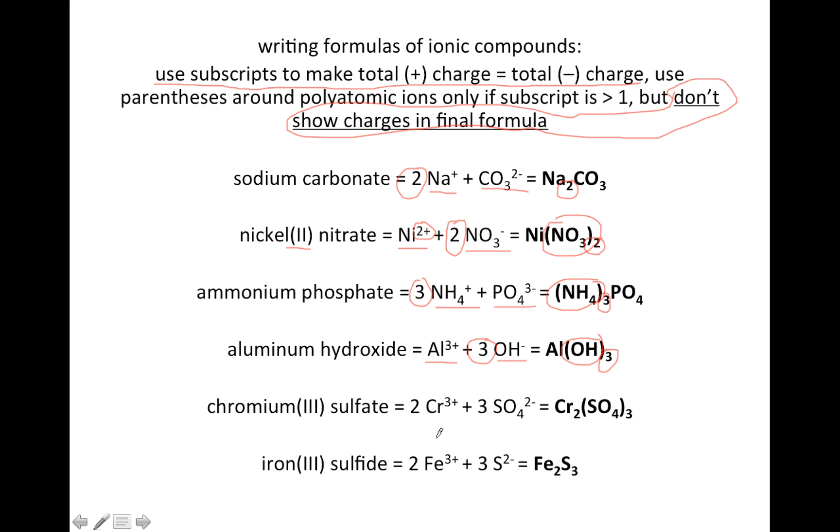These last two are a little trickier. Here, we've got chromium(III), so we know the chromium has a plus 3 charge. Sulfate, SO4, is known to be 2 minus. We want to make the pluses and minuses equal. The only way to do that is to do two chromium ions. That will give you plus 6 total charge. And 3 sulfate, you'll have minus 6 total charge. Those will balance out, and then you just transfer the number of ions into a subscript. Two chromiums and three sulfates, and you put the sulfate in parentheses.